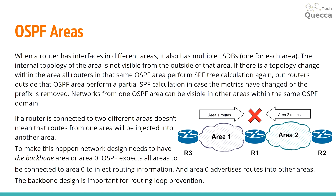To address these issues we need to properly design our network by segmenting it into multiple OSPF areas. When a router has interfaces in different areas it also has multiple LSDBs — one LSDB for each area. The internal topology of an area is not visible from outside that area. If there is a topology change within the area, all routers in the same OSPF area perform SPF tree calculation again, but routers outside that area perform only a partial SPF calculation in case the metrics have changed or the prefix is removed.